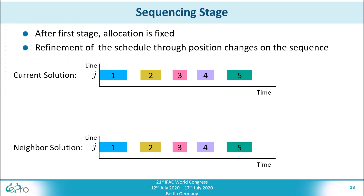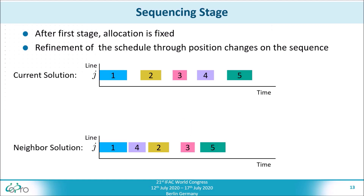Here you can see an example of how a neighbor solution is generated in the sequencing stage. The current solution is modified by changing the positioning of an order within the sequence. The two solutions are again evaluated based on their makespan. As you can see, the neighbor solution exhibits a better makespan than the current solution, so the current solution is again overwritten. After the sequencing stage terminates, the final schedule is obtained.